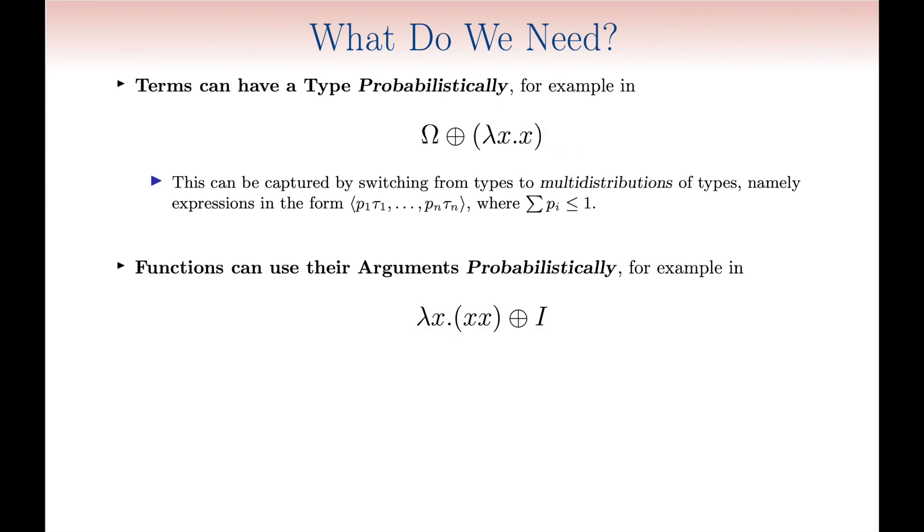But this is not the end of the story. One also needs to capture the fact that functions could make use of their argument only with a certain probability. For example, this function uses its argument twice, but with probability 0.5.